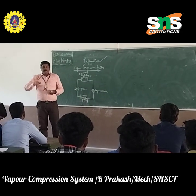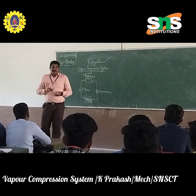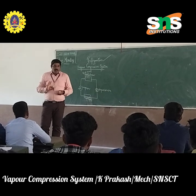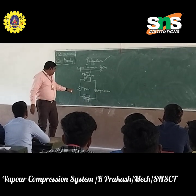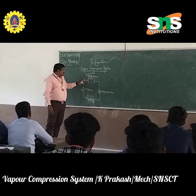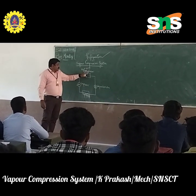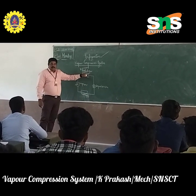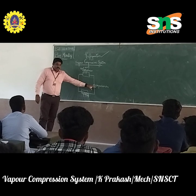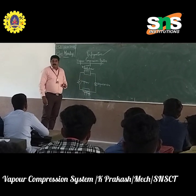These are the four components of the vapor compression system: one is the compressor, condenser, expansion valve, and then the evaporator.